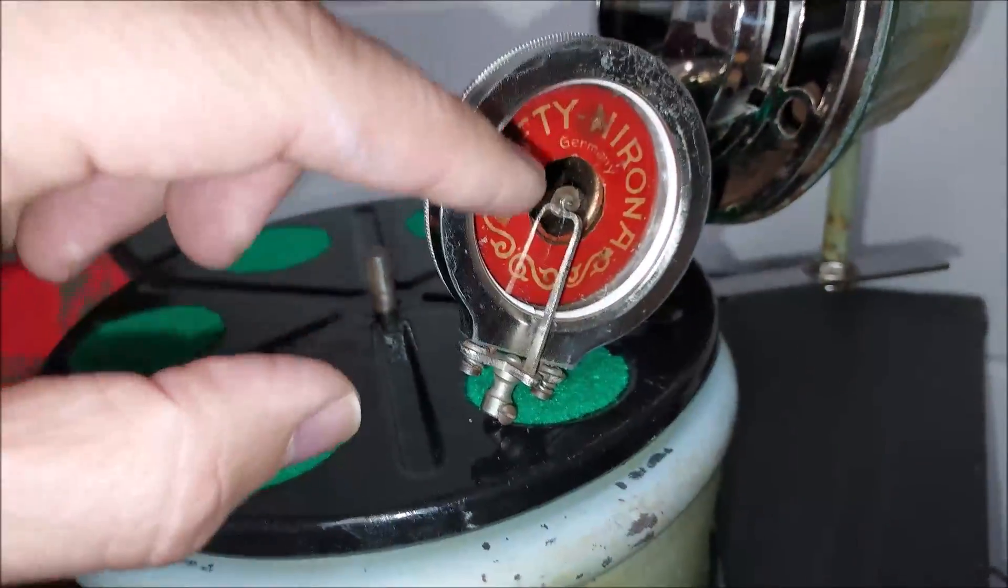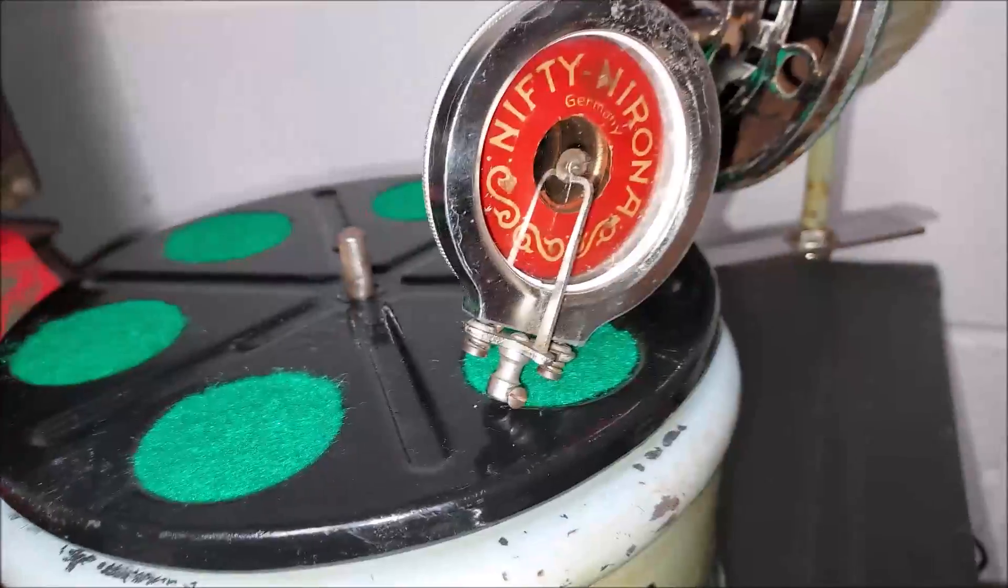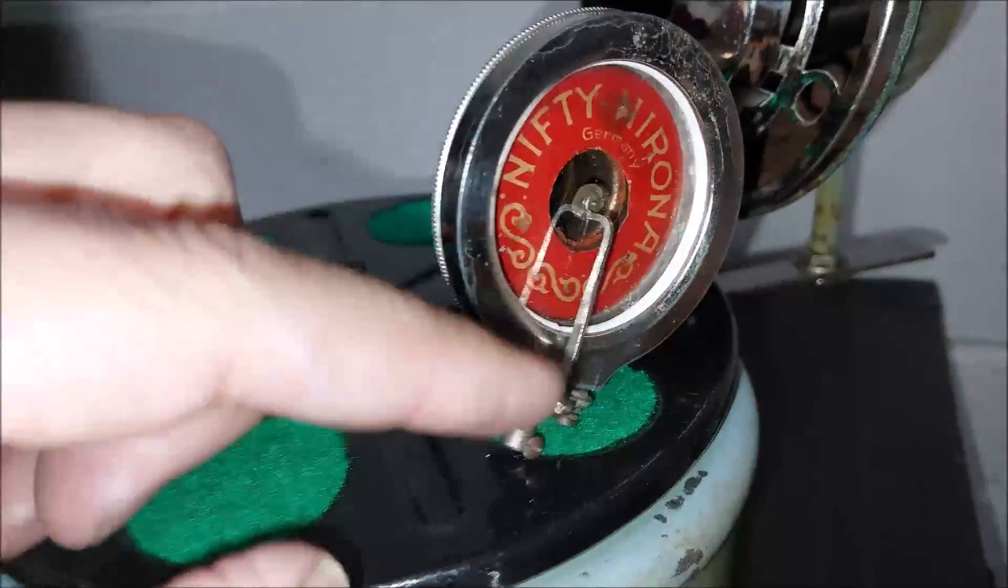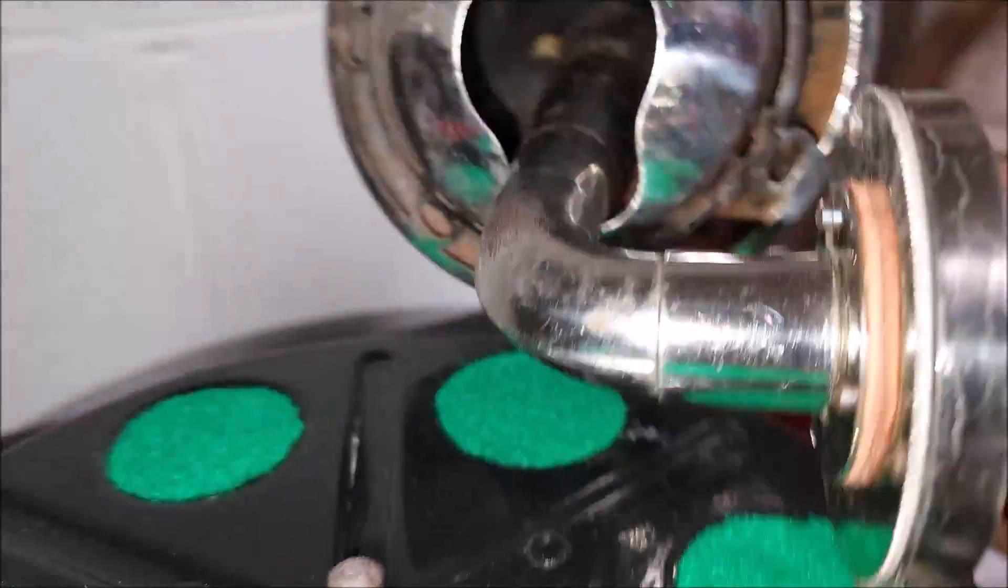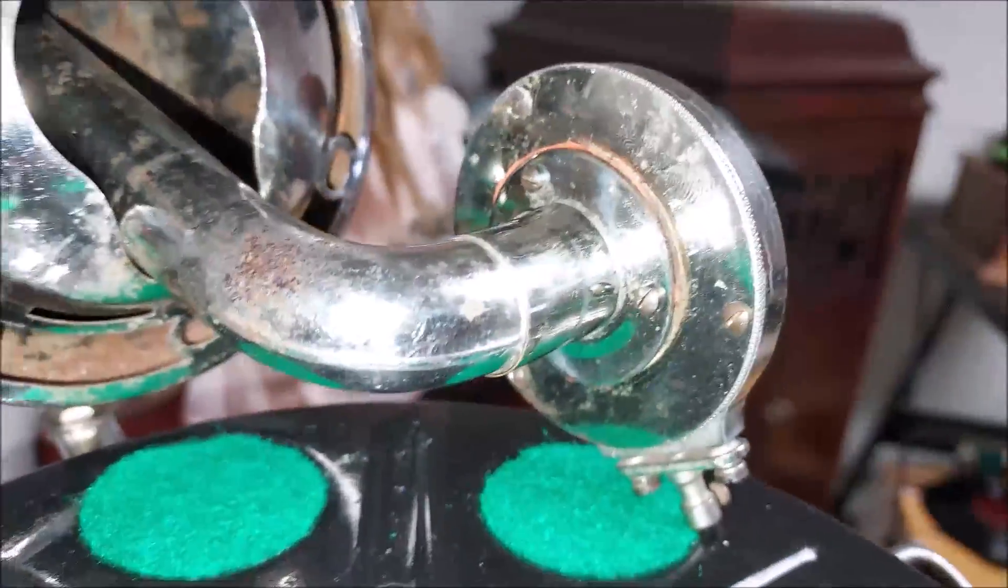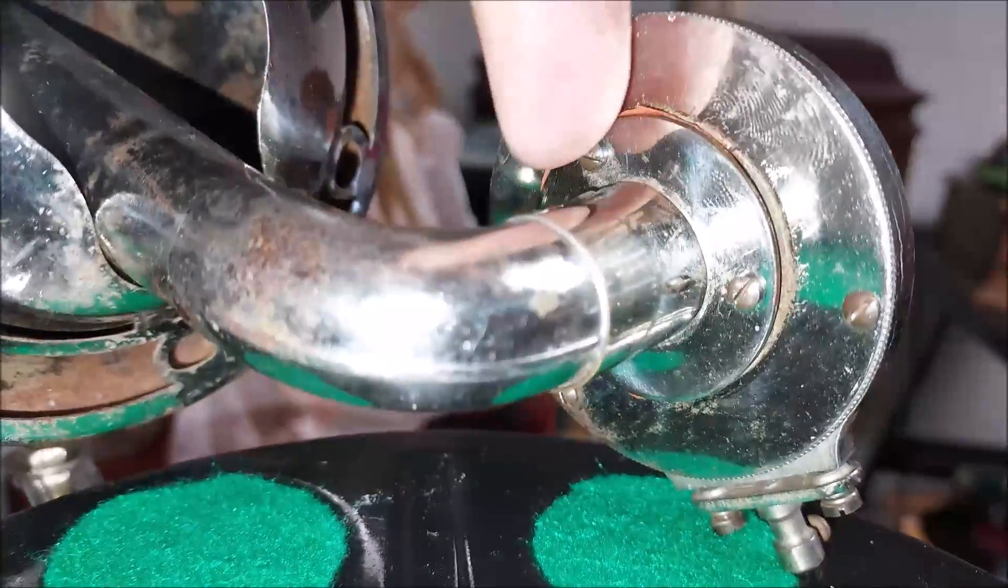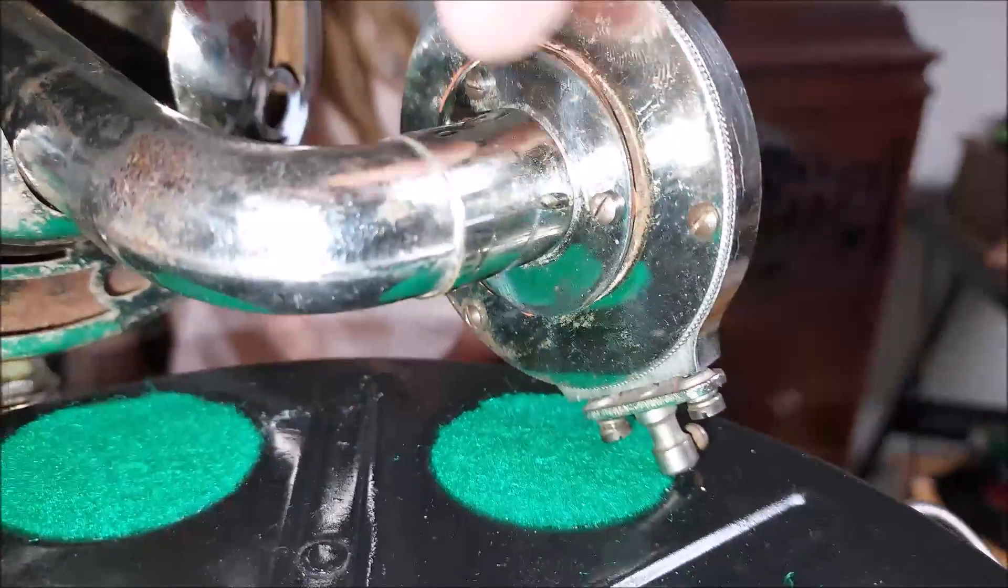Put a new mica diaphragm on there, cleaned it all up, cleaned the needle bar and put new gaskets on here. There's the back. I also put a new gasket on the flange on here, the back flange.